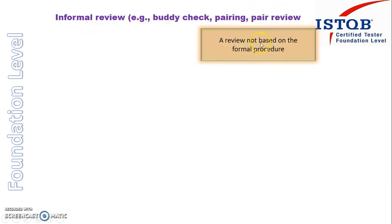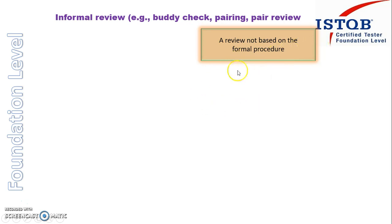The definition of informal review is: a review not based on a formal procedure. So we are not following any formal procedure — we are just asking one person to come and see whether there is any mistake in our document or not. So it is just an informal review.